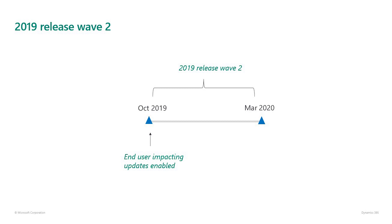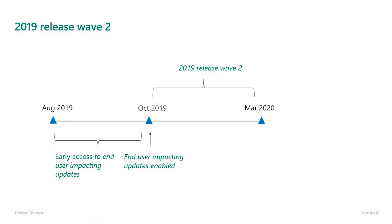Some of the new features that impact your application's end-user experience will be enabled automatically in October. For example, users of sales apps may see a modernized left navigation of the application with color and style updates, or there might be updates to the drop-down display of options. You may want early access in order to validate that your apps are working correctly once the update is enabled, or to provide training material and guidance to get application users ready with the upcoming enhanced experience.